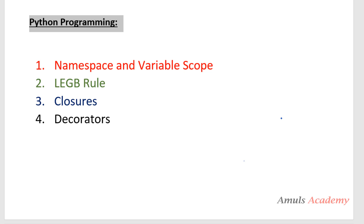Hello guys and welcome to Python programming tutorials by Amuls Academy. In the previous tutorial we discussed about namespace and variable scope. Today we will discuss the four scope types — local, global, built-ins, and enclosed scope — and also we will see what is the LEGB rule.